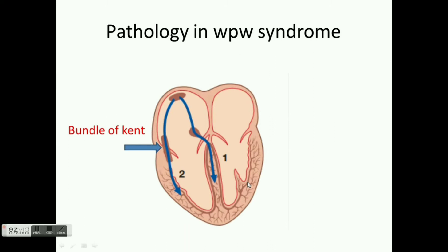Normally, the atria and ventricles are separated by a non-conducting area called the atrioventricular septum. Thus, the impulse generated from the SA node has to go through the AV node to reach the ventricles. The AV node causes a delay in conduction, allowing the ventricles to fill. Usually this delay is 0.12 to 0.2 seconds, represented by 3 to 5 small boxes in the ECG. This delay corresponds to the PR interval in the ECG.